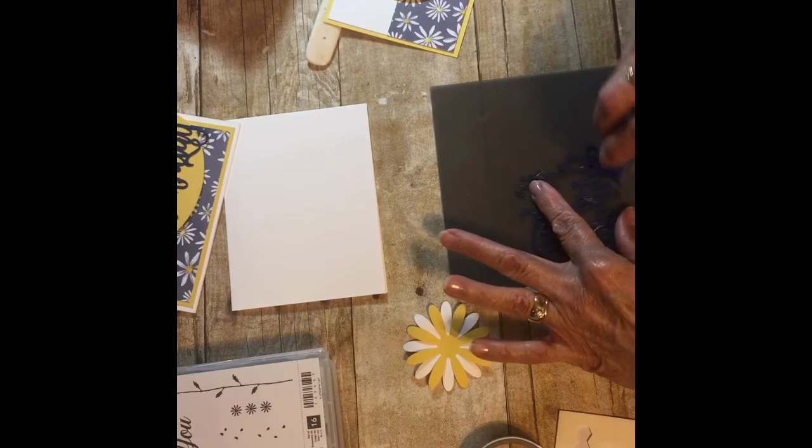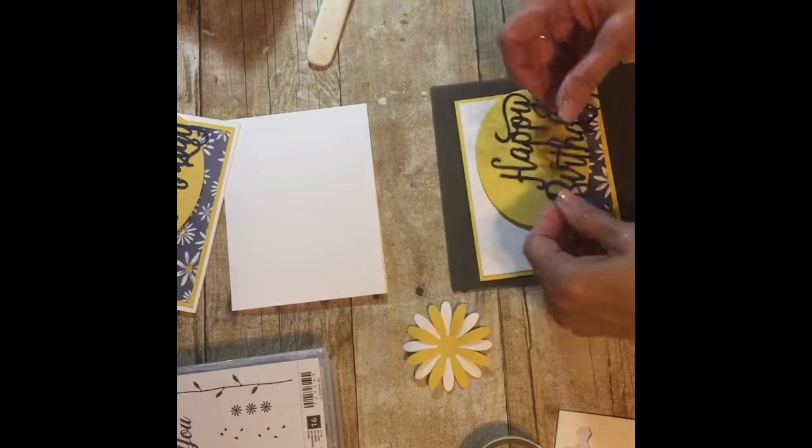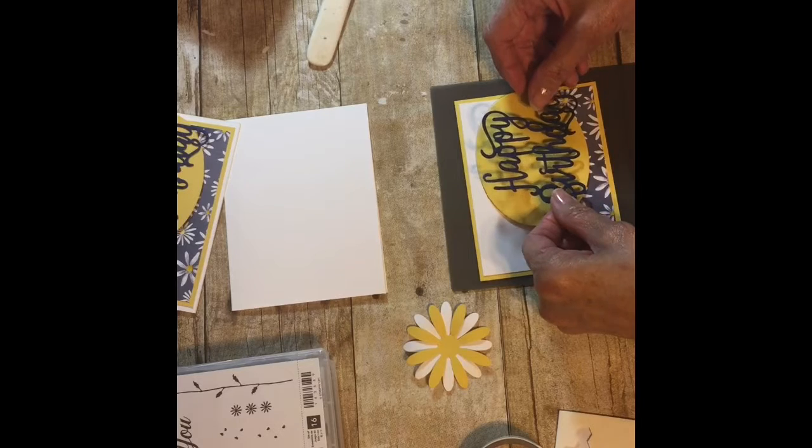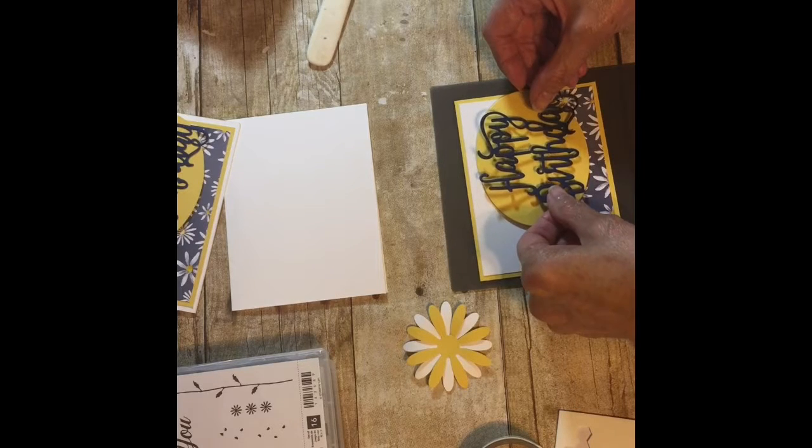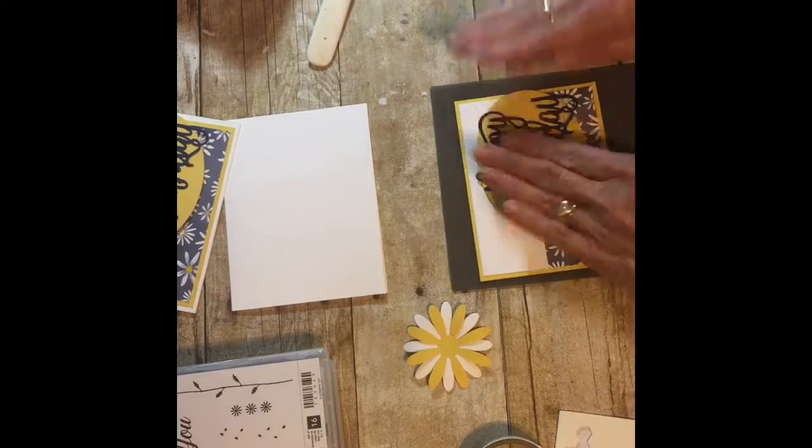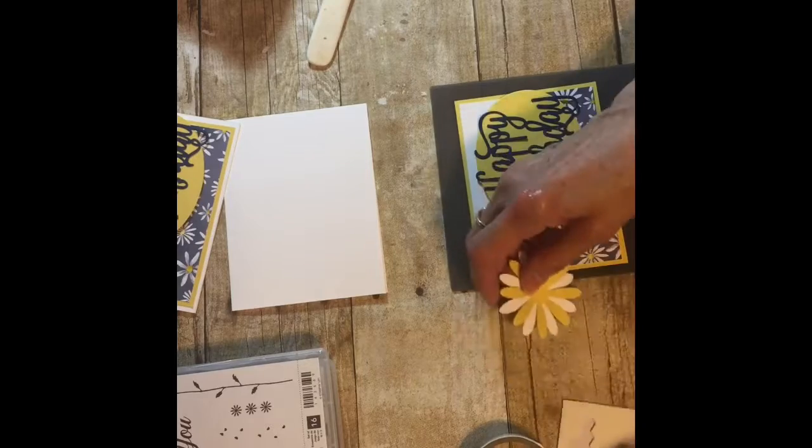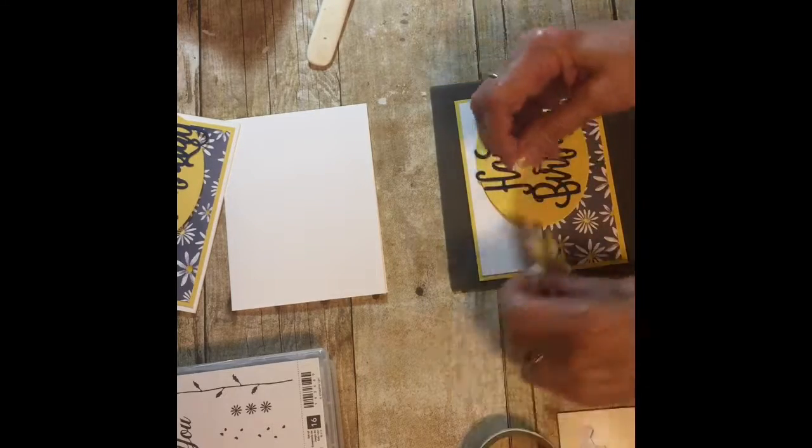Just put some adhesive on there and then just put this on here about like right there. Then I'm going to take another dimensional and put it on the back of the cute little daisy, and put that one just right down on the card like that.